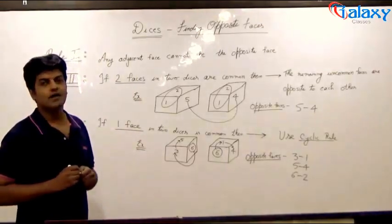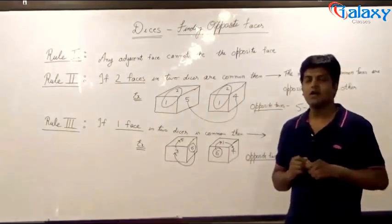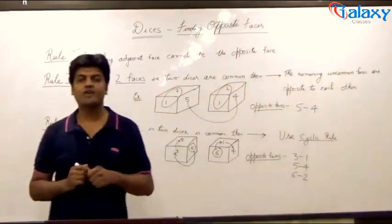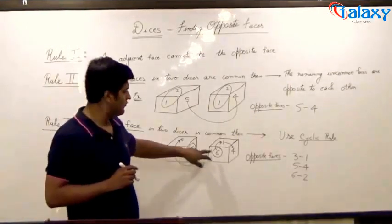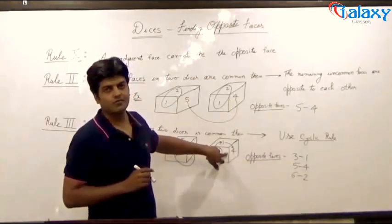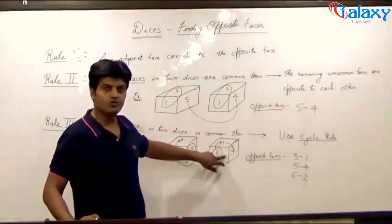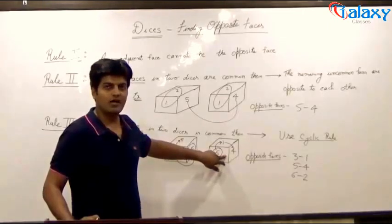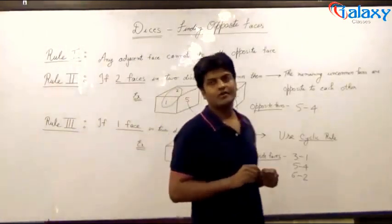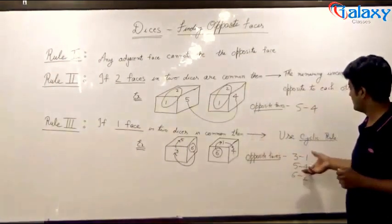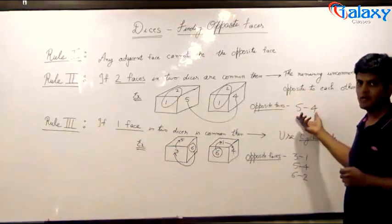Note that here we have chosen to move in a clockwise direction. We can also move in an anti-clockwise direction. But we have to make sure that we are moving in the same direction in both the dices. That is, if we are moving in clockwise direction in the first dice, we must move clockwise in the second one too. If we are moving in the anti-clockwise direction from the first dice, then in the second dice too, we must move in the anti-clockwise direction. And we should always start from the common face. Hence, in rule number three, we could manage to find all the three pairs of opposite faces, while in rule number two, we could only manage one pair.